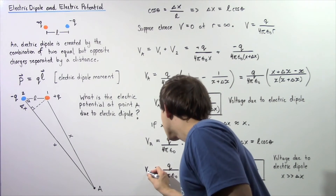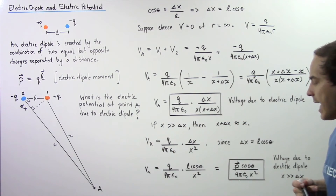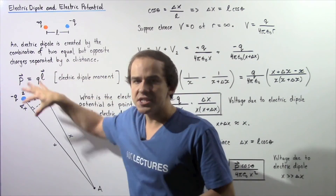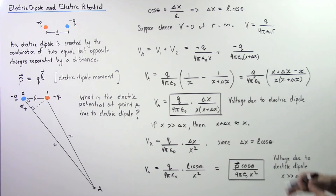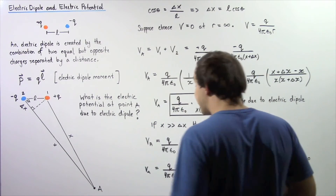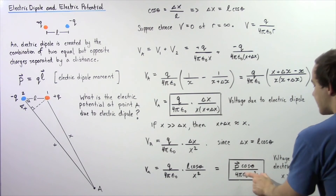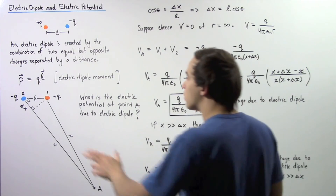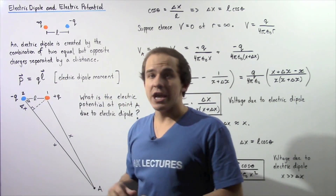The electric potential at point A is therefore VA = Q·L·cos(θ) / (4πε₀·x²). Since Q·L is by definition the electric dipole moment p, we replace Q·L with p. The final result is VA = p·cos(θ) / (4πε₀·x²). This is the voltage at point A due to an electric dipole, valid as long as the distance x is much greater than Δx.